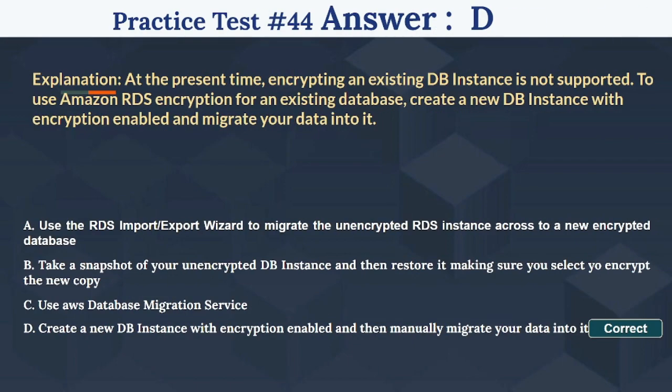The right answer is D — create a new DB instance with encryption enabled and then manually migrate your data into it. At the present time, encrypting an existing DB instance is not supported. To use Amazon RDS encryption for an existing database, you must create a new DB instance with encryption enabled and migrate your data into it. Let's move to the next question.